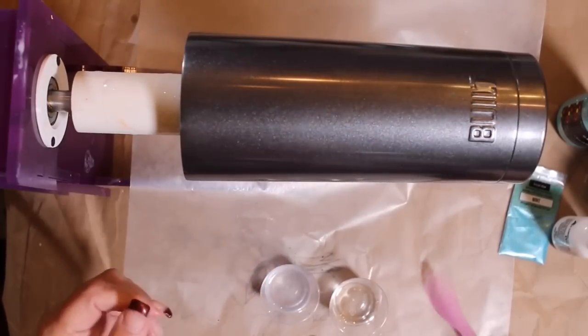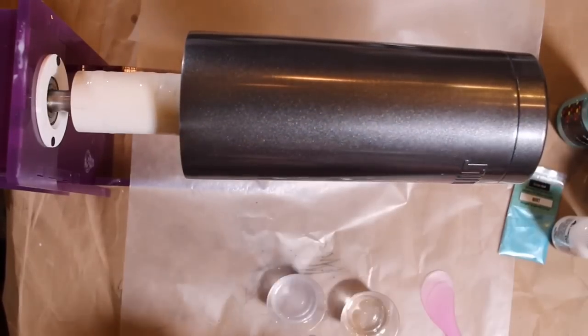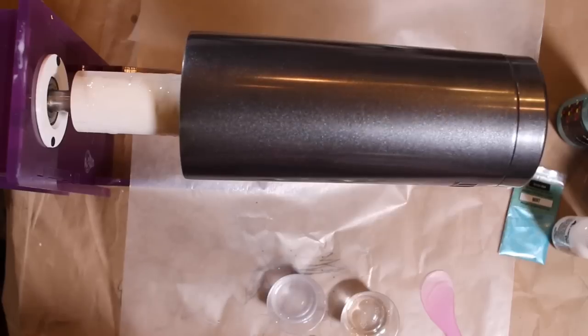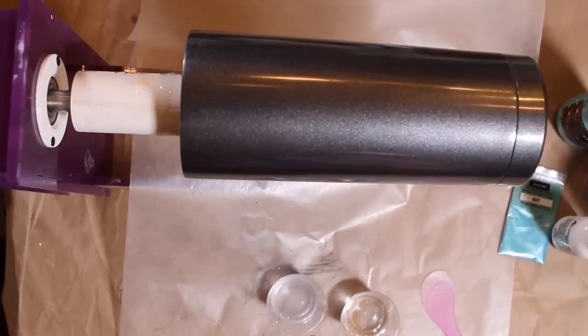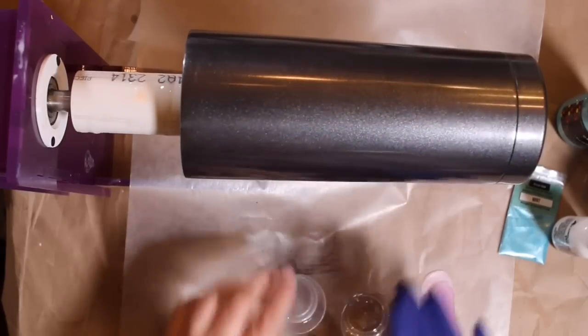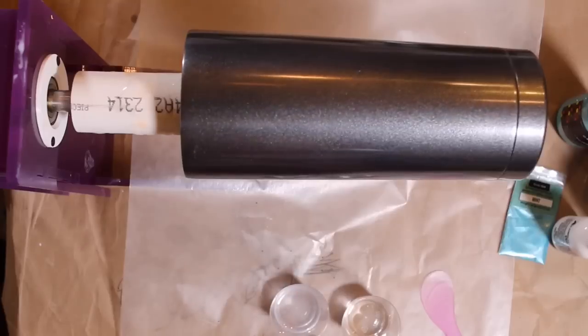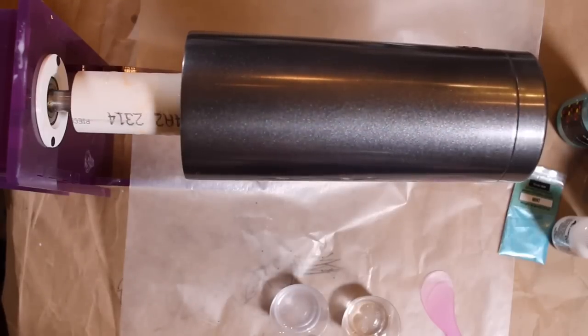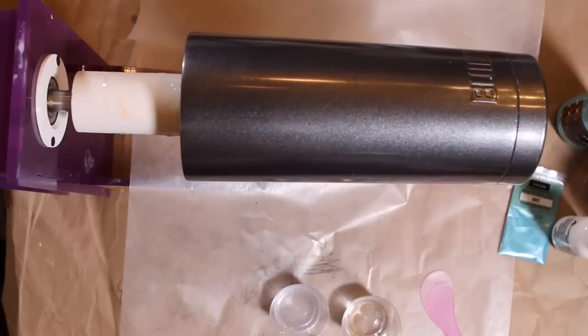So I'm going to start by mixing my two epoxies together so I'll probably speed up through this section a little bit but I'm going to mix those two together until they become clear again. They get kind of murky looking and you have to mix them slowly and thoroughly otherwise you'll end up with bubbles as well.